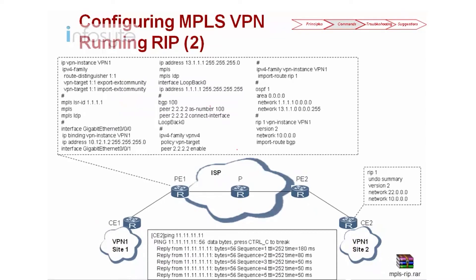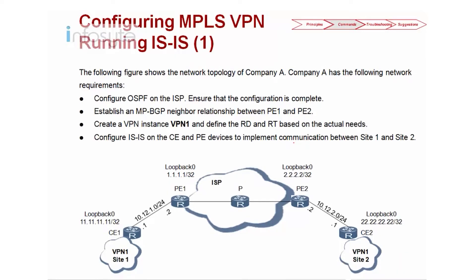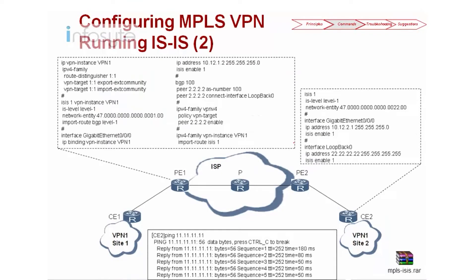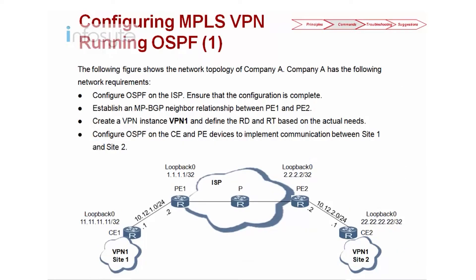In review: the RIP configuration we just went through involved configuring RIP information, importing RIP routes into BGP, and importing BGP back into RIP. The same applies to the ISIS side — on ISIS we import route ISIS, and on ISIS itself we import route BGP. Note that the reference uses only level 1, but I am using both level 1 and level 2.